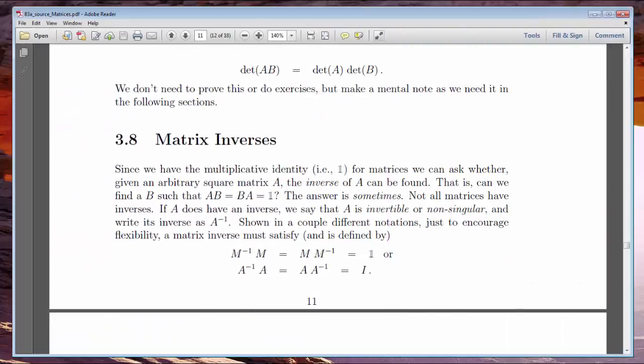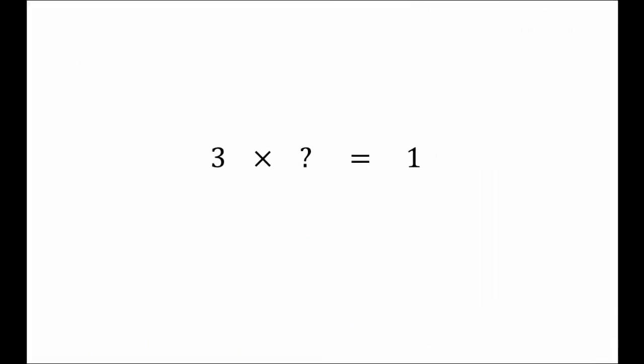Now, inverses aren't that hard if you think about simple numbers. Say you give me the number 3, and I want to construct another number that will multiply 3 to get 1. I'll pick one third. If you give me minus 37, I'll pick 1 over minus 37. In fact, for any number you give me, I can find a second number that combines with yours under multiplication to produce 1.